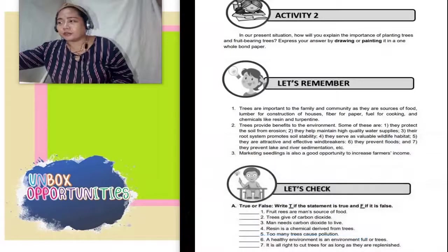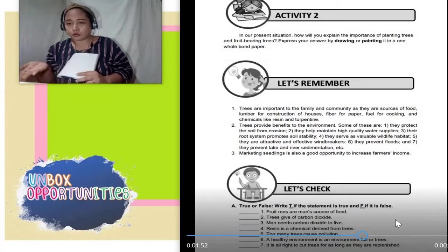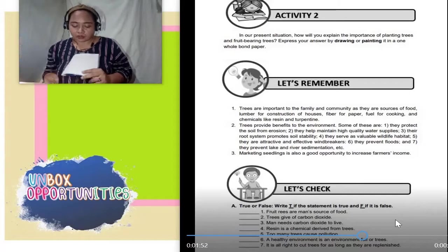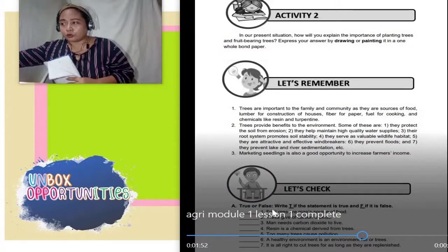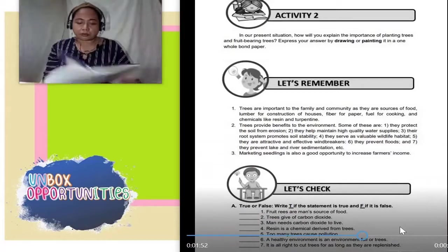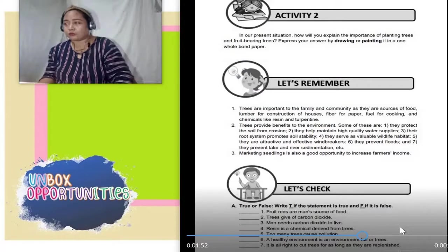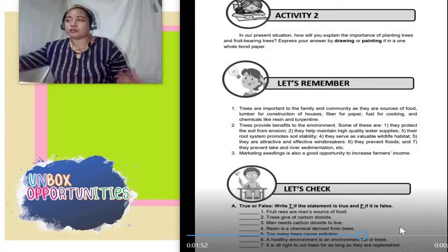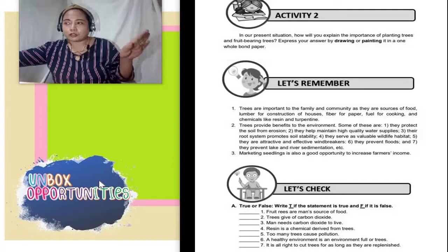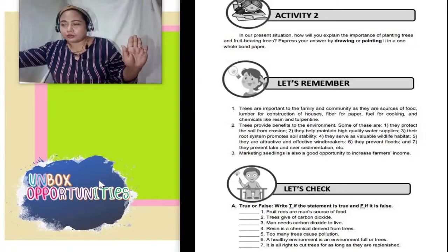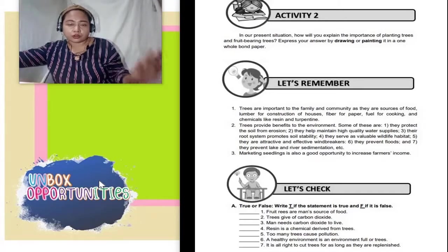Next — let's check. Ito po ang magsisilbing quiz. Kumiha kayong module. Hindi nyo na dun sasagutan sa module — ang gagawin nyo na lang, susulit nyo na lang ang sagot ninyo sa inyong mga notebook. Lagay nyo ulit let's check, then 1 to 15 — susulit nyo na lang po. Write T if the statement is true and F if it is false. Napakasimple lang — ilalagay mo lang kung letter T kung true yung statement, then F kung false yung statement.